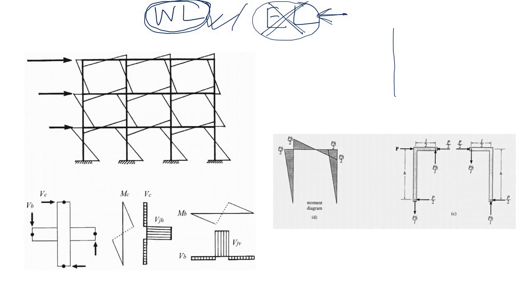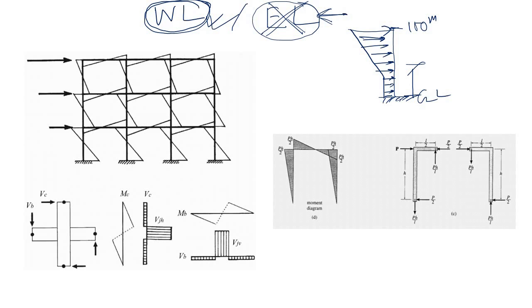What happens with wind load? You know that the pressure distribution due to wind load is something like this: if this is the ground and this is your 100-meter height, the wind load distribution is constant up to some extent and then it varies — meaning the greater the height of the floor, the greater the wind load.